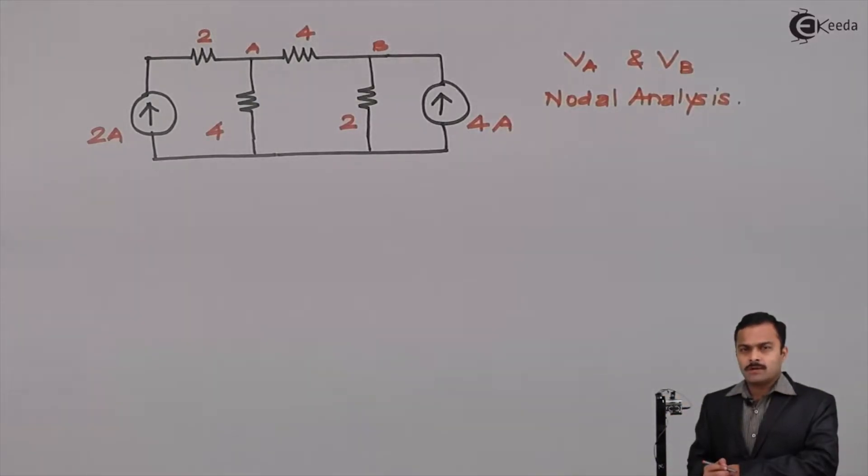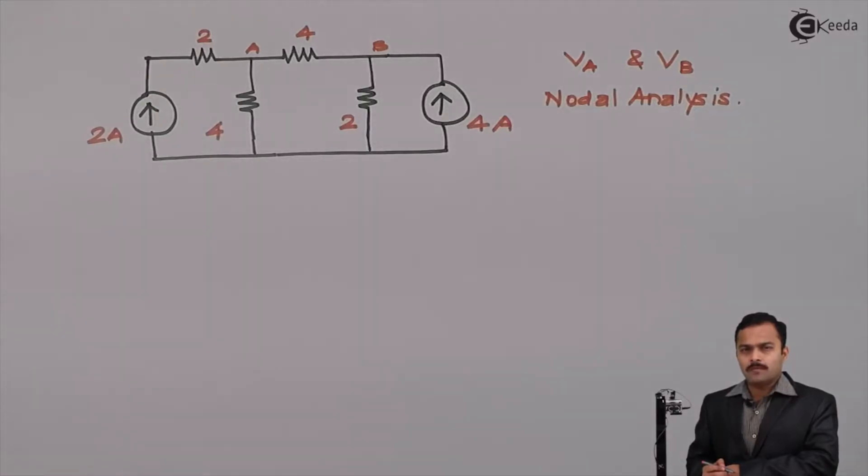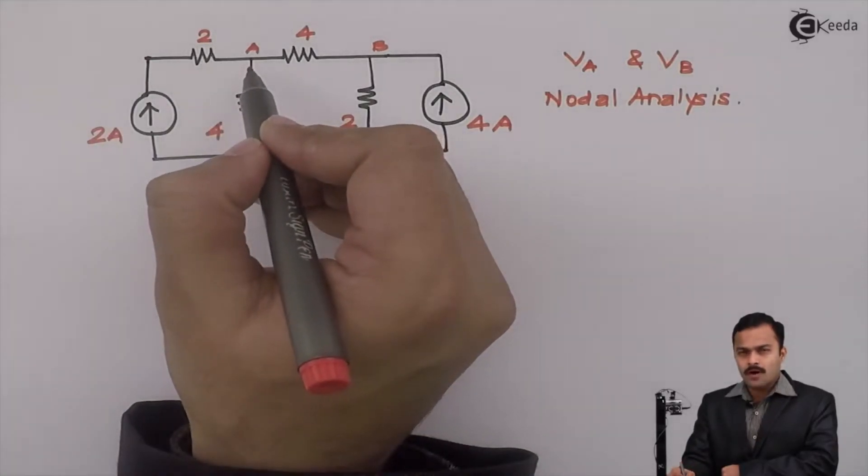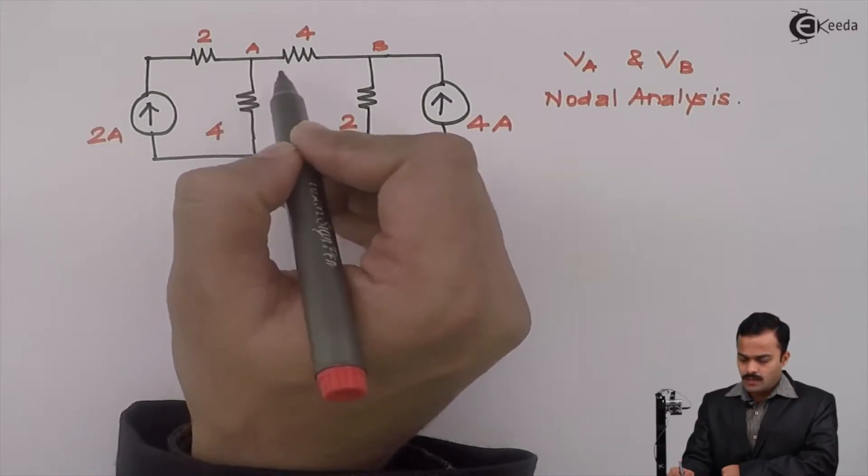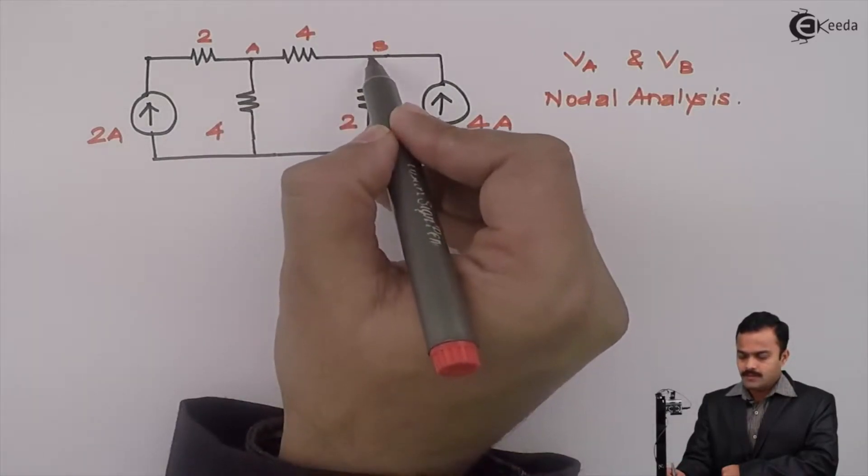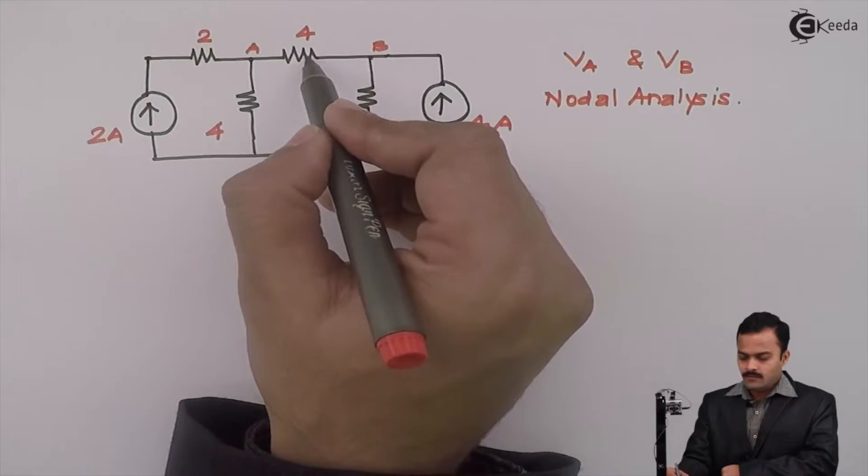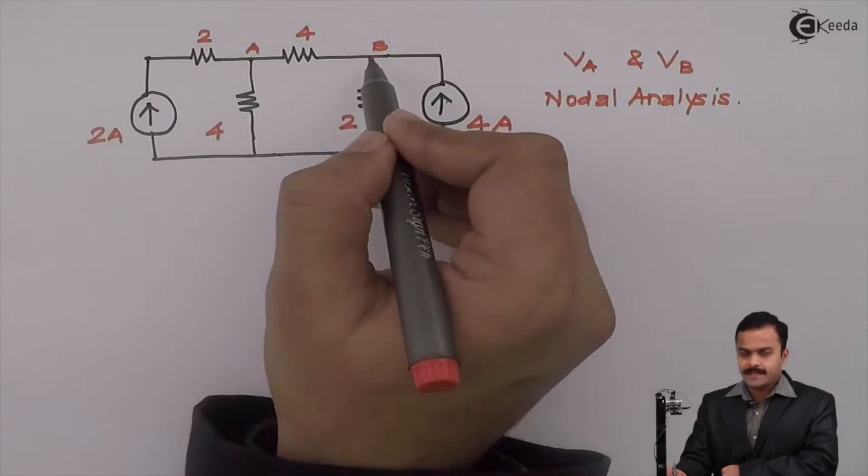So let's solve a problem. Now, first step to solve a problem using nodal analysis is to identify how many nodes are there. So let's identify nodes present in a circuit. So node is a point where more than 2 branches are connected. So 1, 2, 3 branches are connected at this point. So node A. Node B. 1, 2, 3 branches are connected together. So this is the second node B.